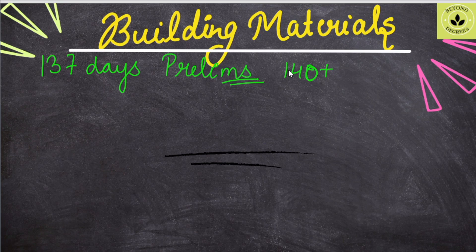You have to strive for first class and aim for 140 marks in prelims. We know that civil engineering is a very big subject with many topics, but we always need to follow the 80-20 rule. There are some subjects and topics that are asked the most, and we have to prioritize those first.